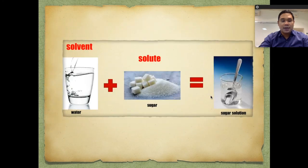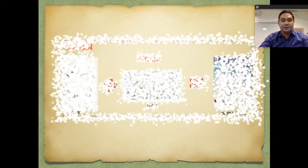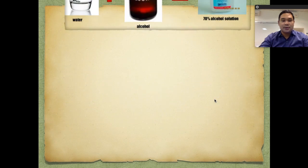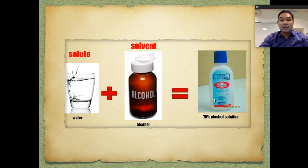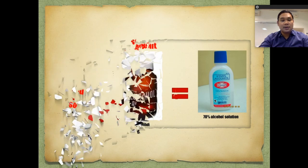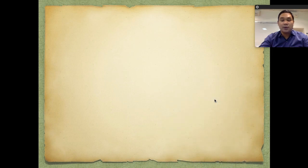Another example: water plus sugar forms a sugar solution. Next, water plus alcohol — when mixed, we cannot distinguish which is the water and which is the alcohol, and therefore we call it a 70 percent alcohol solution. Take note that there is no chemical reaction between water and alcohol.